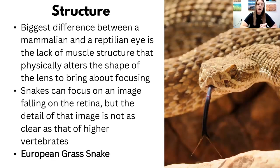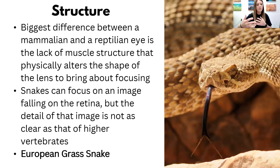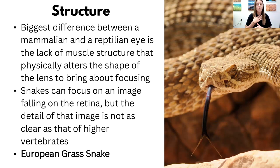The biggest difference between a mammal eye and a reptile eye is the lack of the muscle structure that physically alters the shape of the lens. Instead of ciliary muscles being contracted, it works to increase the pressure in the eye, which fixes the focus lens backwards and forwards from the retina. When you use a magnifying glass, that's pretty much like the structure of a snake eye — it's like a magnifying glass. So snakes can focus on an image using the retina, but the detail of that image is not as clear as what we would see — they can see the shape, it just won't be as perfectly clear.